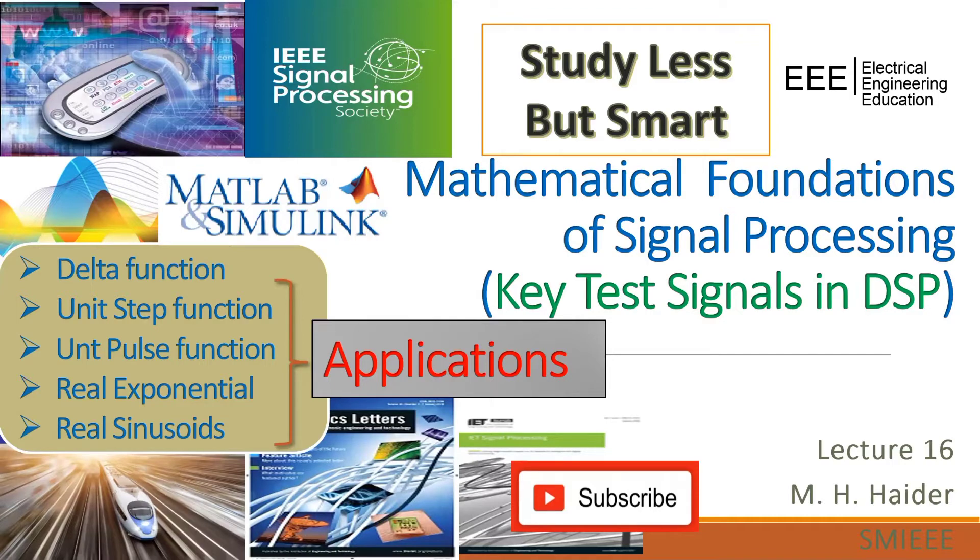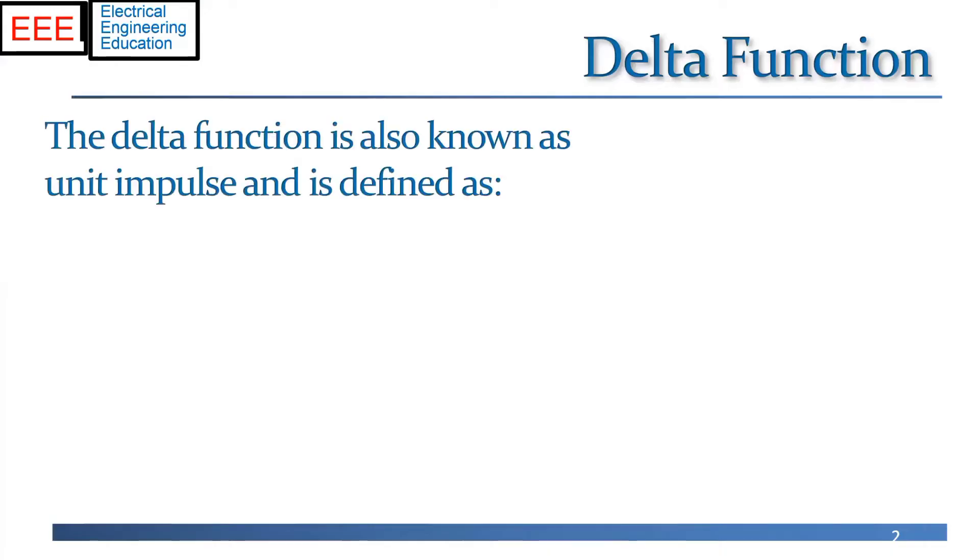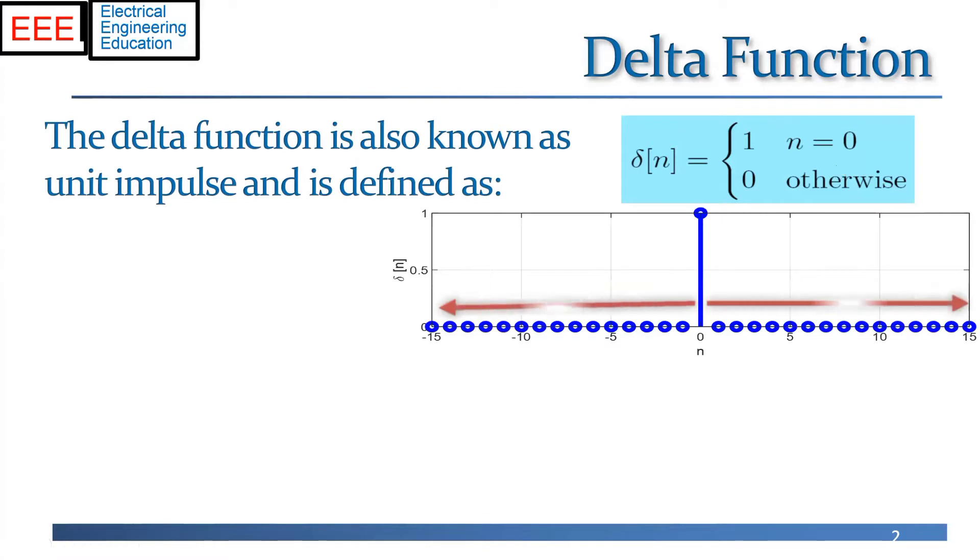So let's start by talking about the delta function, which is the simplest non-trivial signal. It's simply a signal that is zero for all time, except at time point n equals zero, it peaks up to the value one. So mathematically, we say that a delta pulse or function is zero for all time, except it peaks up to the value one at n equals zero.